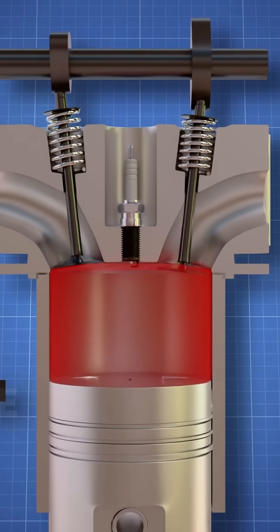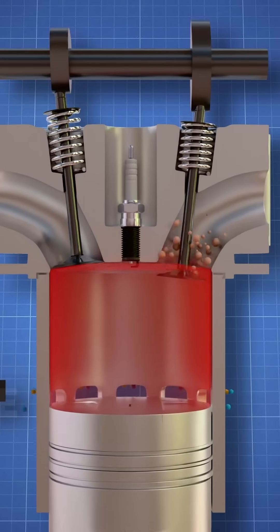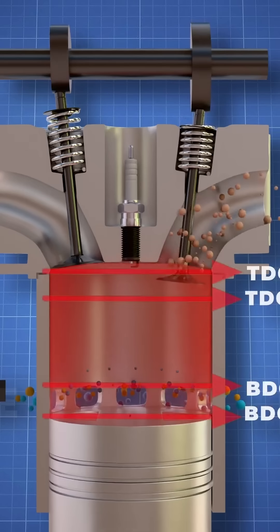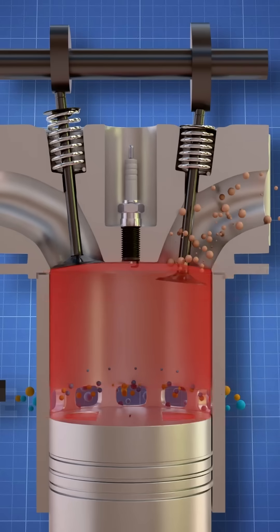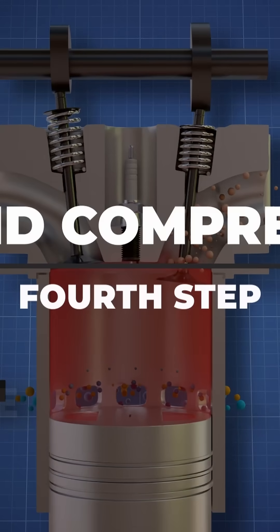As the piston moves down from the combustion, it moves past the first BDC uncovering intake ports. At the same time, the exhaust valve opens. Fresh air-fuel mixture enters the chamber through the intake port and pushes the burnt exhaust gases out in a process called scavenging, just like in a two-stroke.